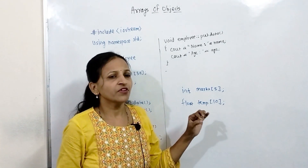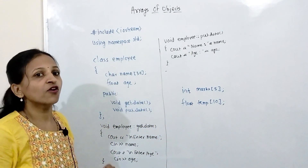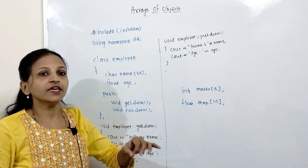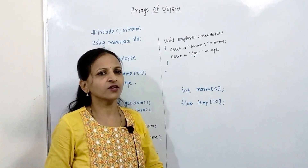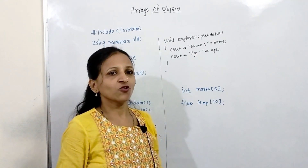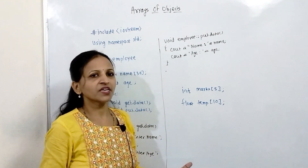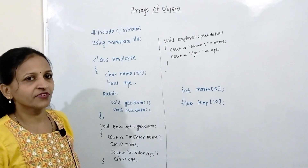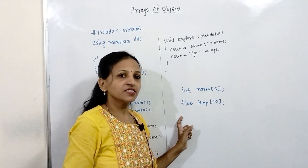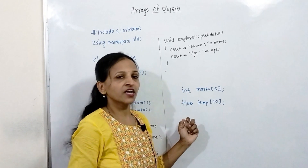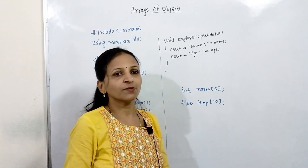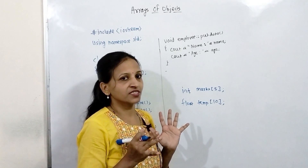In the same way, we can create an array of objects — meaning an array of variables of type class. An object is nothing but a variable of a class or instance of a class. Where we were writing basic data types, here we can write a class name. That will be the concept of array of objects.